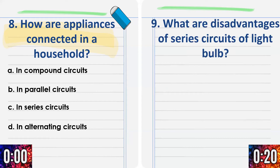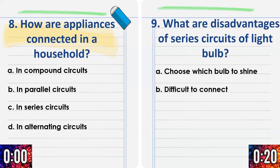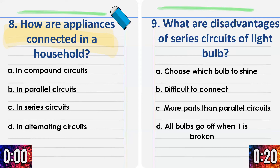Number 9: What are disadvantages of series circuits of light bulbs? A) Choose which bulb to shine. B) Difficult to connect. C) More parts than parallel circuits. D) All bulbs go off when one is broken. Circle your answer now.